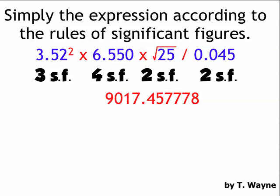So two sig figs is the least number of significant figures. So I'm going to round my answer of 9,017.457778 to two significant figures. So the answer becomes 9,000. So I wrote down a 9 with a line over the 0, or I could have used scientific notation and written 9.0 times 10 to the third. So those are the rules for significant figures for multiplication and division.